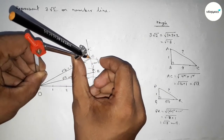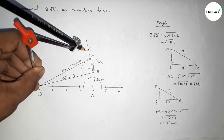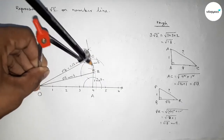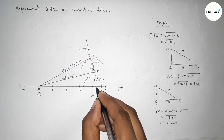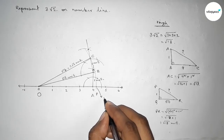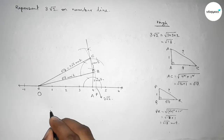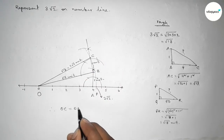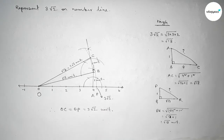Taking the length 3√2 using compass and drawing an arc which meets the number line at a point. Taking this point P — this is 3√2 on the number line. Therefore OC and OP are equal, both equal to 3√2 units.